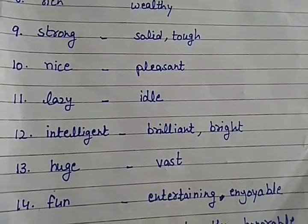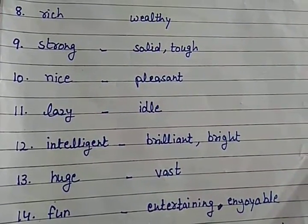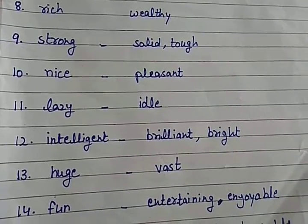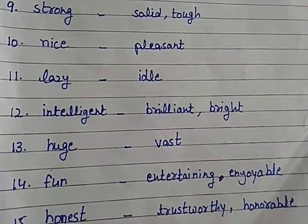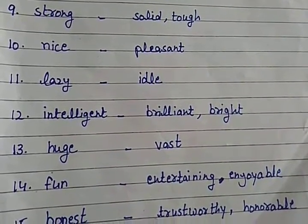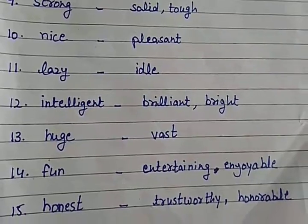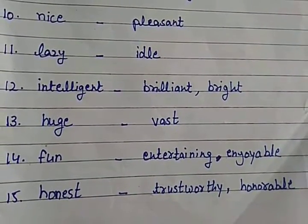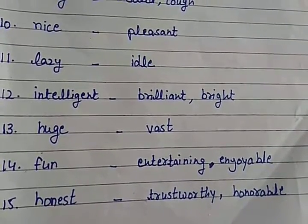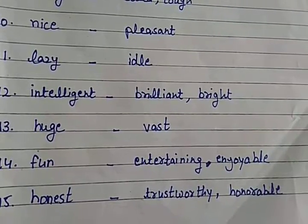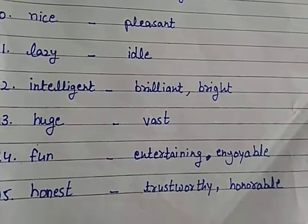Next is intelligent. Intelligent ka synonym brilliant ya bright. Intelligent means hooshyar. Next is huge. Huge ka synonym vast. Huge means bada. Next is fun. Fun ka synonym entertaining ya enjoyable.